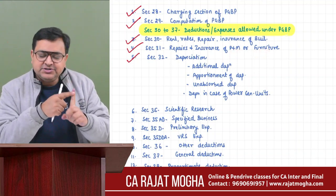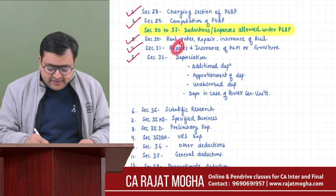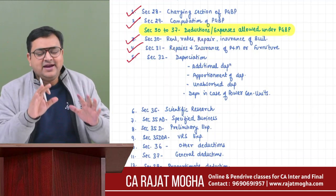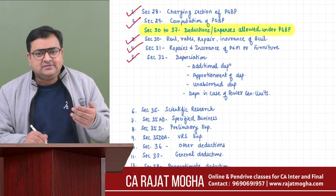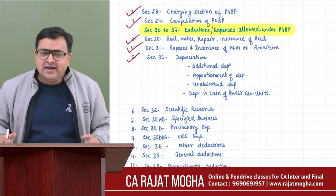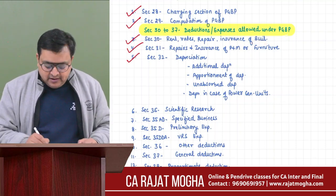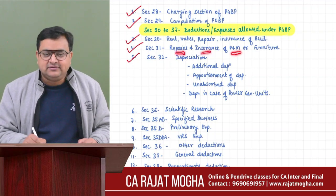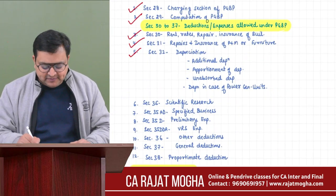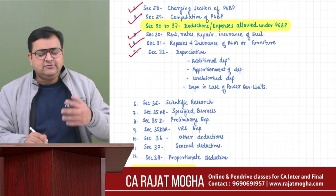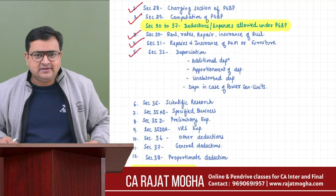Section 31 was related to plant, machinery, and furniture, and covered only two types of expenses: repairs and insurance. If there is any other expense - for example, rent of a machine - Section 30 won't cover it since that's for building, and Section 31 covers only repairs and insurance. So rent of machine would be allowed but under Section 37, which we will discuss today.